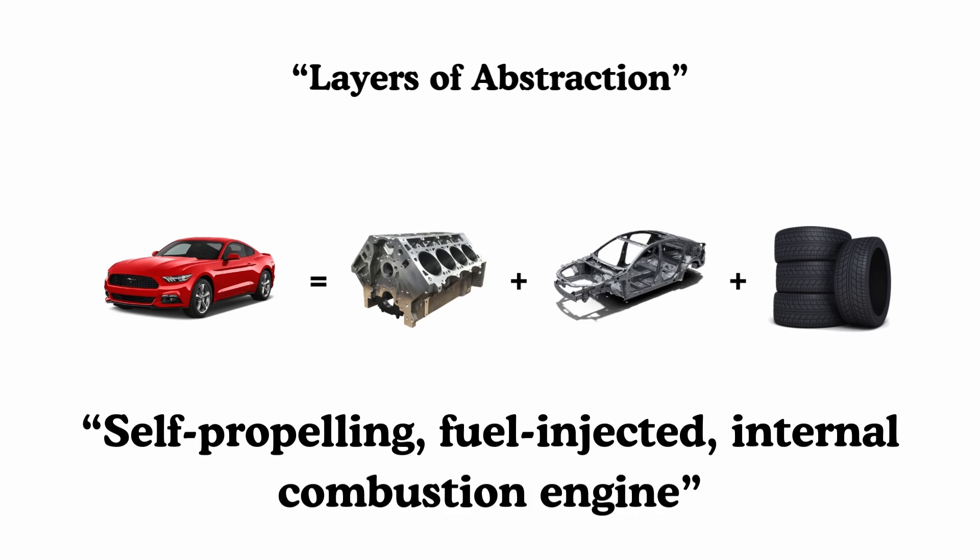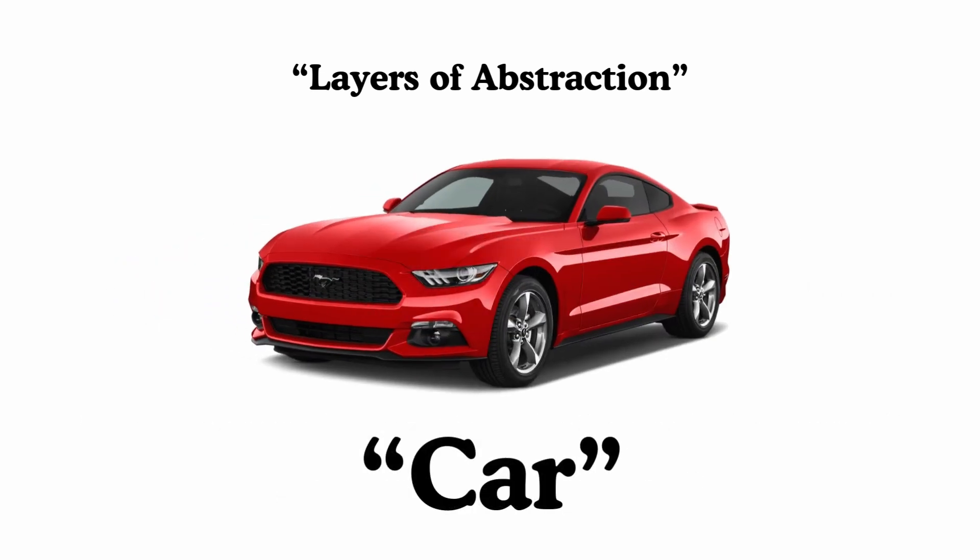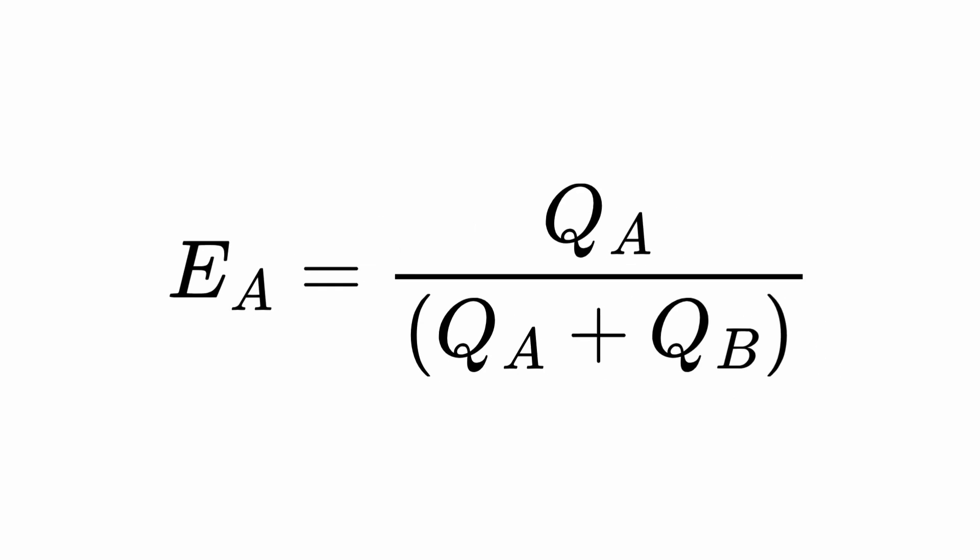Before we get into the expected outcome, we'll have to talk about layers of abstraction — and abstraction in this case just makes things easier to understand. For instance, instead of calling something a self-propelling fuel-injected internal combustion engine, we just call it a car because it's easier to understand. Same with the expected outcome symbol — it's also a layer of abstraction, and if we pop open the hood, it means this equation. The Q values are another layer of abstraction, and if you pop open the hood, they look like this.